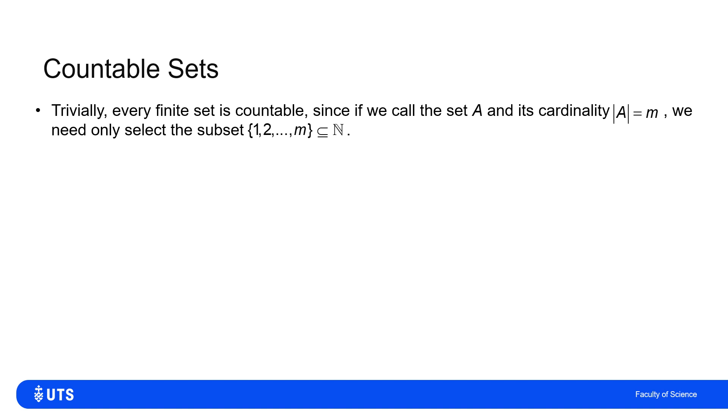So let's say we've got a set A, which has cardinality |A| = m. That means there's m distinct elements in the set A. To show that this is countable, I just have to find some subset of the natural numbers such that I can define a bijection between A and that subset.